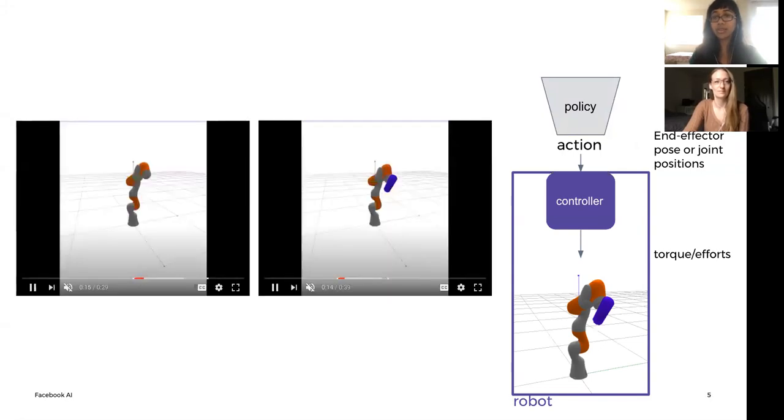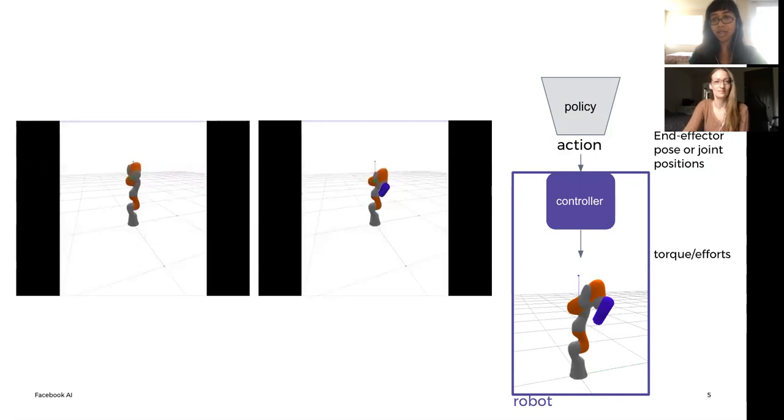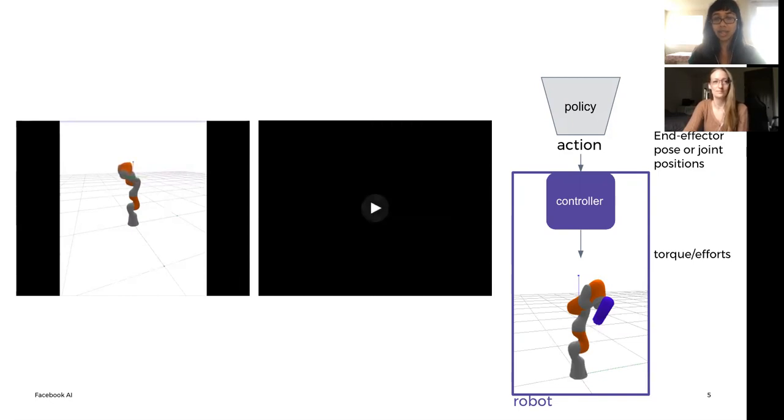With an object in the gripper, however, the controller is not able to execute the same trajectory, not having been adjusted for the extra mass it's gripping in the end-effector.